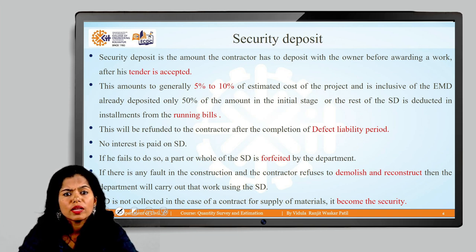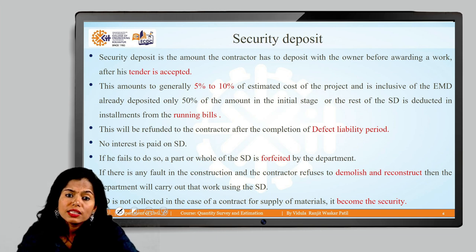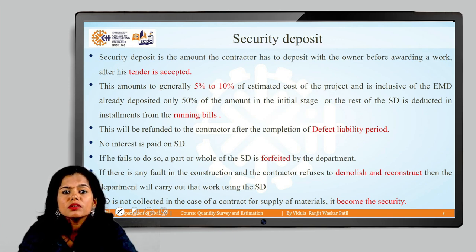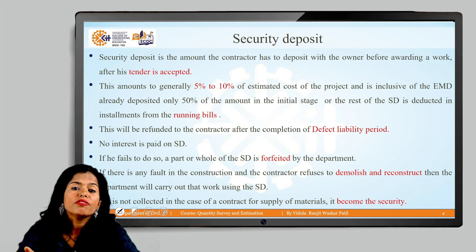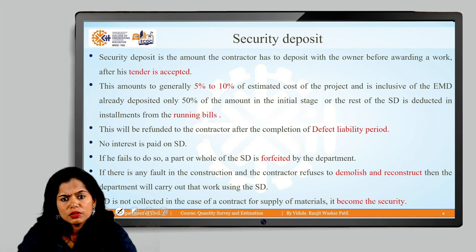For example, if the contractor's bill is one crore and the security deposit is 10 percent, then 10 lakhs is withheld with the department. This is collected through running bills — each monthly bill has 10 percent withheld. If the monthly bill is 10 lakhs, one lakh is withheld with the department.